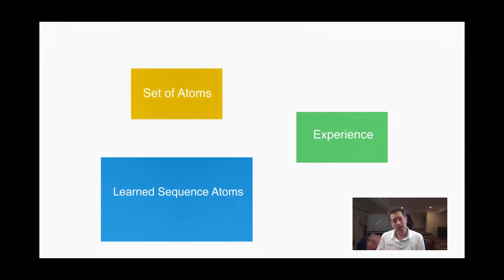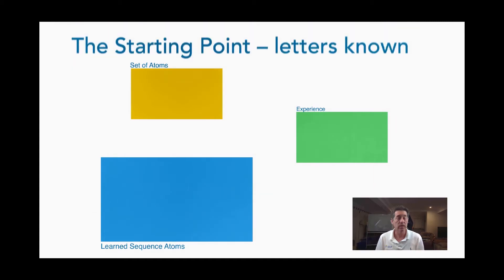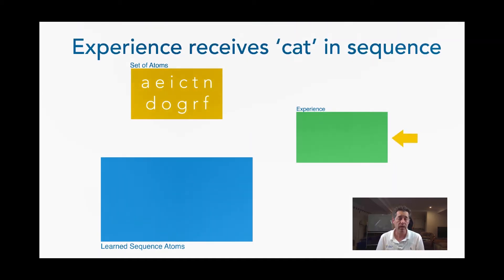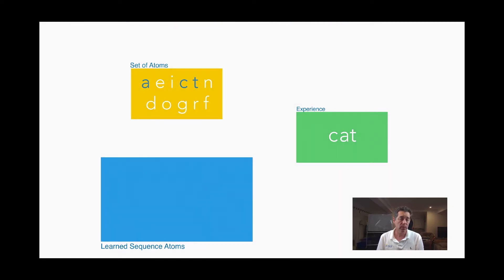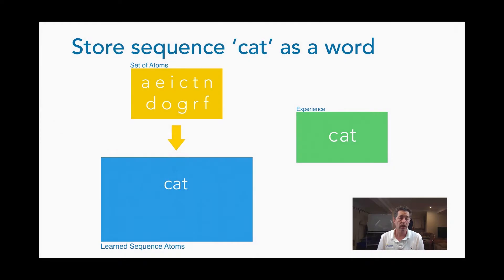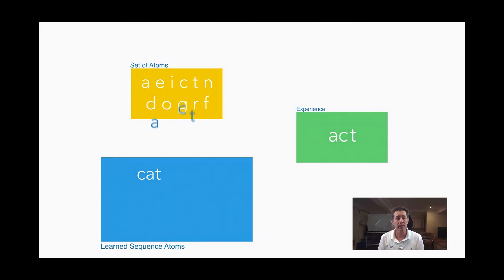So looking at that another way, here's our experience on the right, and we've got our set of atoms on the left. And then in comes the experience, C-A-T. It then recognizes that from the atoms that we've already stored. There's our letters. And effectively, we're learning a sequence, C-A-T. In effect, it's going to be X-X-X, pointing back to the set of atoms, which points back to the sensory experience. But you can see, simply by experience, we're now able to build up a vocabulary of these lists based on the set of atoms. And because those atoms are parts of sets, we can now recognize them in a wide variety of ways with different fonts and cases and so forth.